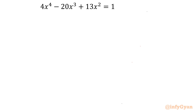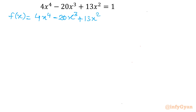I am going to demonstrate two approaches. Let me consider the given equation as f(x). So, 4x⁴ minus 20x³ plus 13x² minus 1 equals 0.